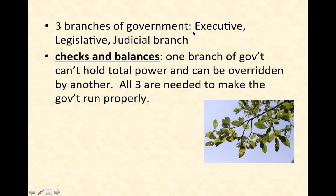So again, you have three branches of government: executive, legislative, and judicial. An important aspect of many political systems is the idea of checks and balances. Checks and balances means that one branch of government can't hold total power or total control — it can be overridden by another branch. All three are needed to make government run properly, and it's important that no single branch has too much power.